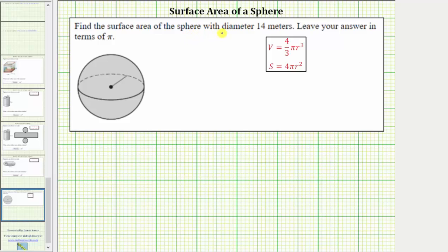We're asked to find the surface area of the sphere with diameter of 14 meters. We're told to leave the answer in terms of pi.